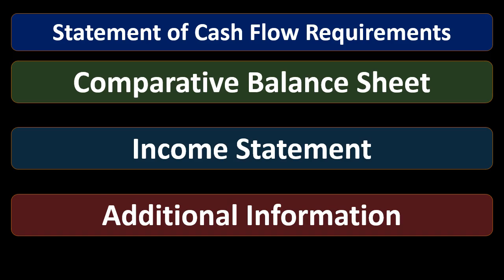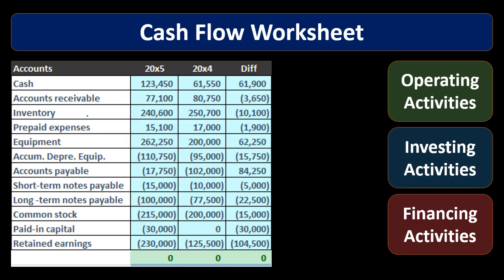Once we have this information, our major component is going to be the comparative balance sheet — that's where we will start. This may seem unusual considering we're talking about a cash flow statement, which covers activity happening over time — something you'd typically associate with the income statement. But what we're going to do is back into that activity by looking at the change, the difference between two points in time.